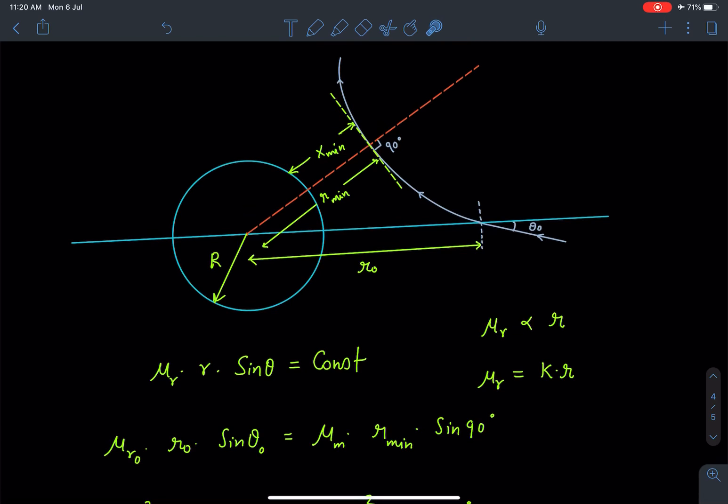At this instant I'm calling this radial distance as r_min. However, in the question they are asking distance of this point from the surface, so I'm calling it x_min. There is a simple relation: R plus x_min equals r_min. We need r_min for the formula. μ(r) is given as proportional to r.